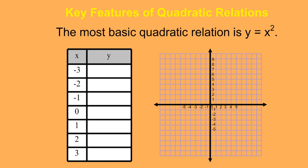This tutorial is going to introduce you to the key features of quadratic relations. The most basic quadratic relation is y equals x squared. If we wanted to see what the graph of y equals x squared looks like, we could fill in a table of values and plot the points.